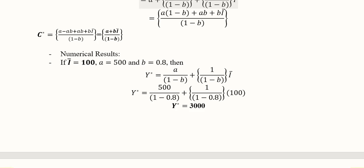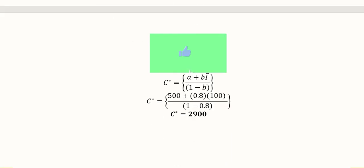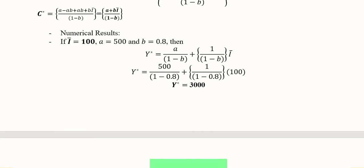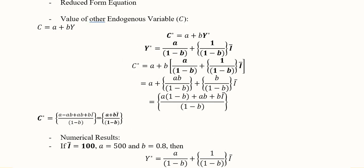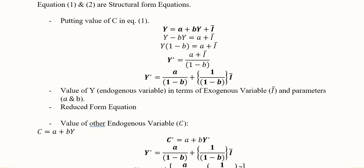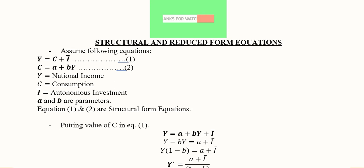In the same way, the reduced form equation for C asterisk can be used in order to get the equilibrium level of consumption and it is found here, 2900. So this is how the reduced form equation is used to find the equilibrium values, and behind it are the structural equations that help us to develop the reduced form equations. Thank you.